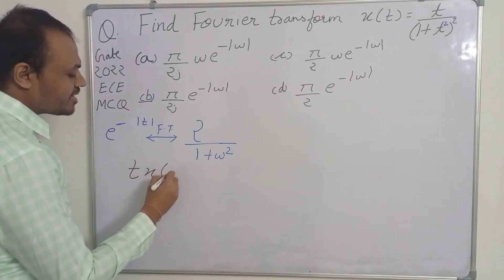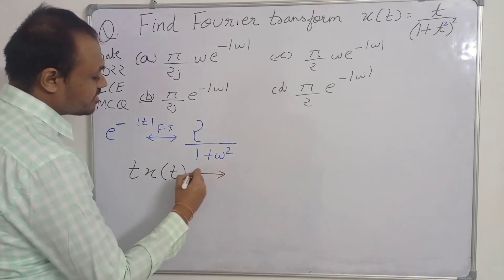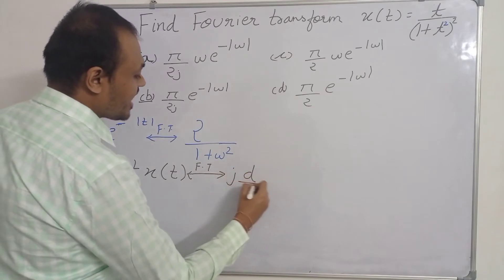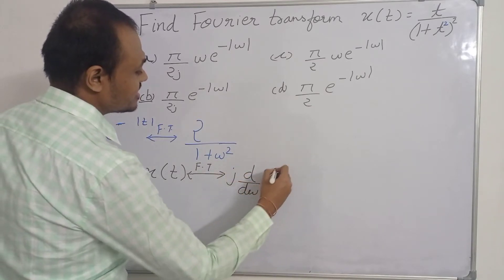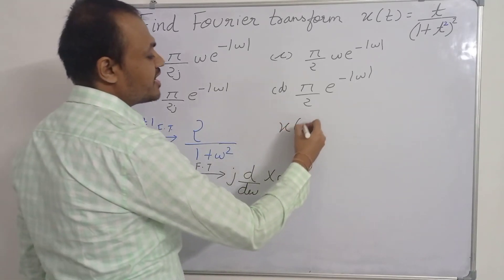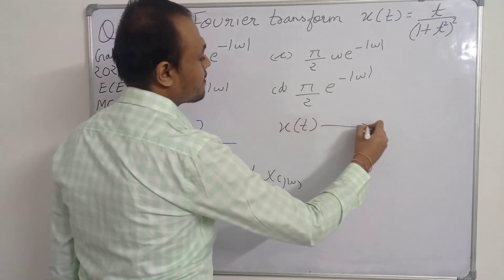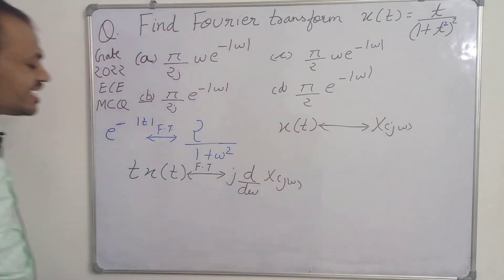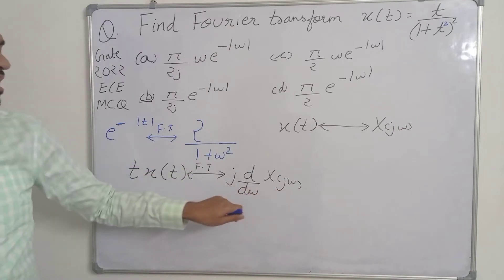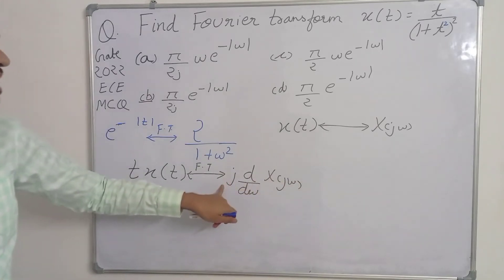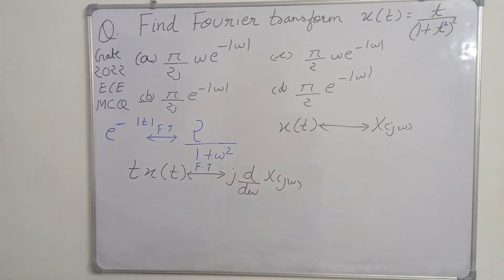The differentiation-in-frequency-domain property states: t · x(t) ↔ j · d/dω [X(jω)], where X(jω) is the Fourier transform of x(t). So if we multiply x(t) by t, we get j times the derivative of X(jω) with respect to omega.